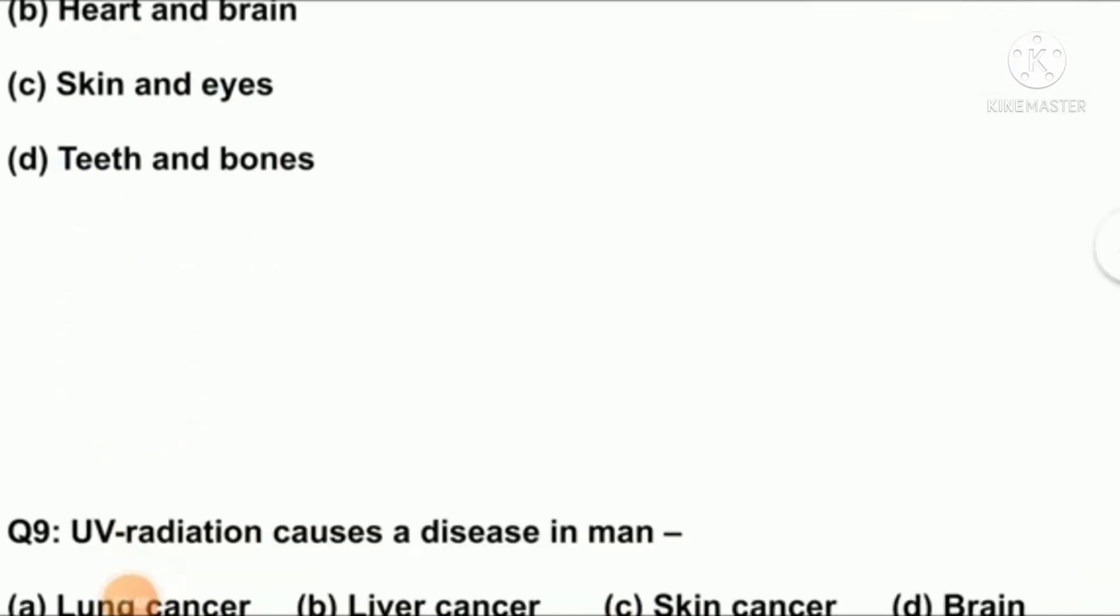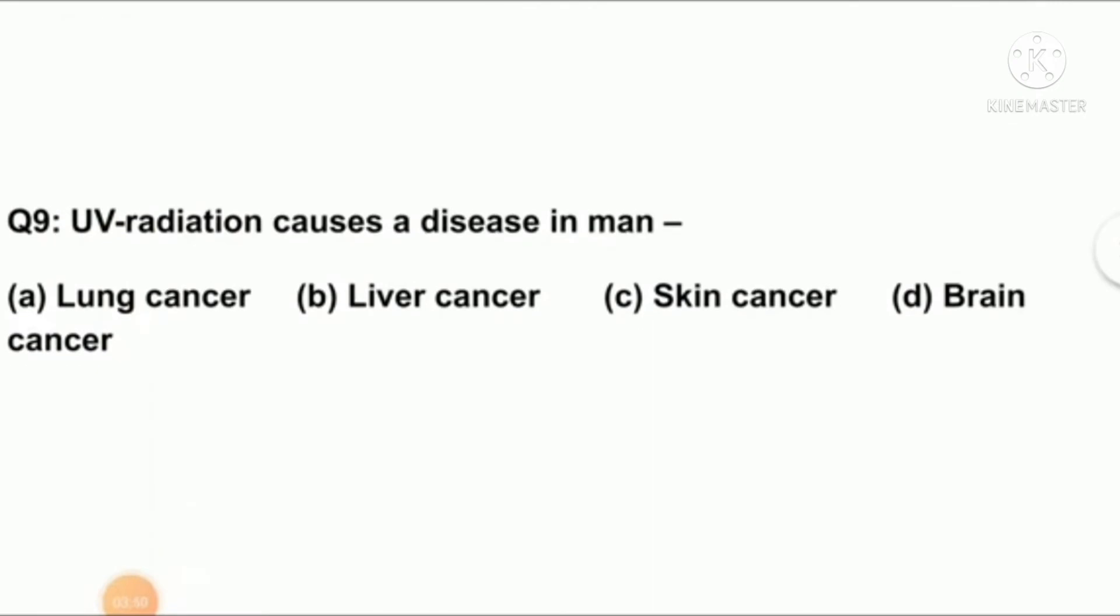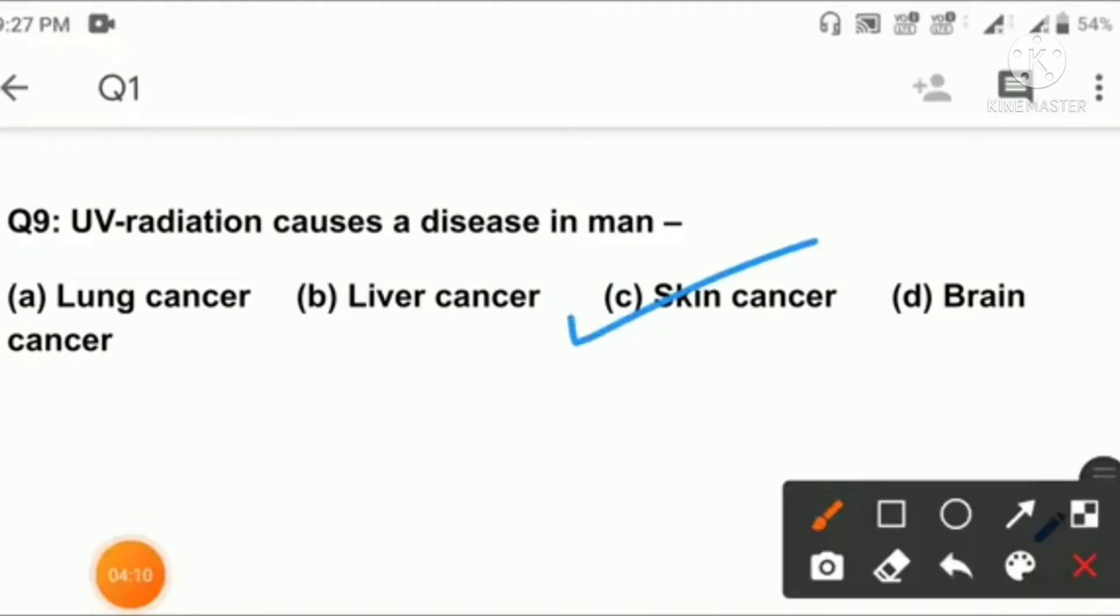Question number nine: UV radiation causes a disease in human. Option A: lung cancer, B: liver cancer, C: skin cancer, D: brain cancer. Right option is C: skin cancer.